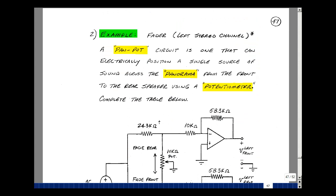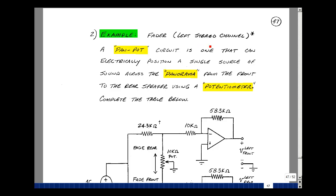Let's take a look at an example where we can use this modeling technique of the inverting amplifier. What's shown below is called a fader circuit, and you may have experienced this circuit in an automobile where you have speakers in the front and speakers in the back, and you can position all the music in the front, all the music in the back, or anywhere in between. This is also called a pan-pot circuit, and a pan-pot circuit is one that can electrically position a single source of sound across the panorama from the front to the rear speaker using a potentiometer.